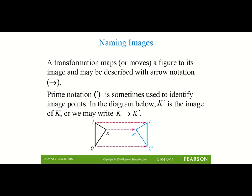When we name a transformation, we can name it by arrow notation, going from a pre-image to an image. The pre-image is always the original point. To show the image point and that it's related to K, you write K with an apostrophe — it's called K prime. That is how we show an image point.